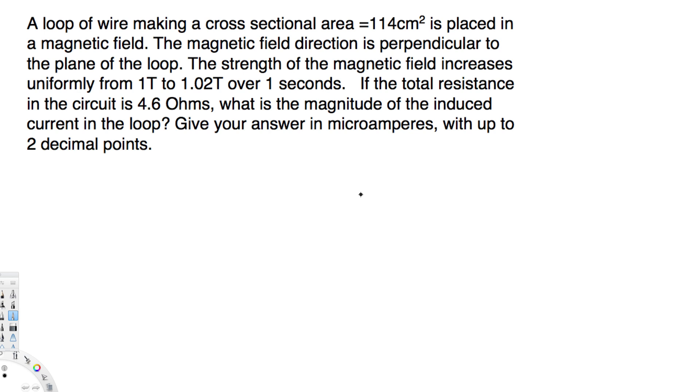If the total resistance in the circuit is 4.6 ohms, what is the magnitude of the induced current in the loop? Here the question is asking to find out the induced current in the loop.